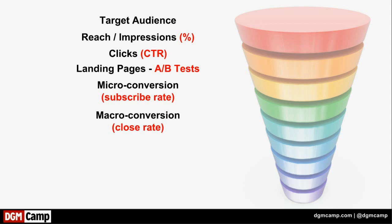So when we ask for the business, that's what we call our macro conversion — where we're actually going to ask them to place an order, in this case to buy a seat in DGM Camp. When they buy a seat, there are hopefully going to be 25 to 30 people in this class. Some people may send two or three people and get a discount, and some may have a coupon from a sponsor, but we're going to have an average order amount — hopefully somewhere near $995. We'll use that average order amount multiplied by the number of conversions or closes to get our total revenue.